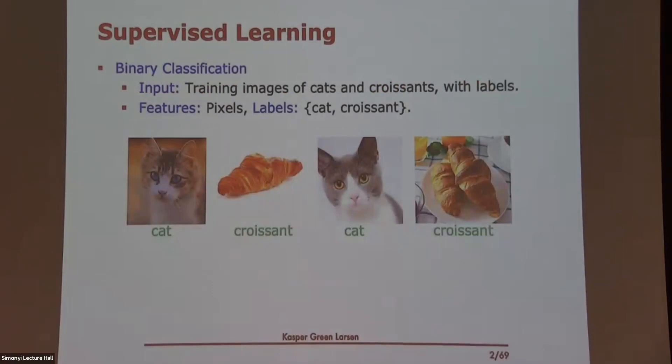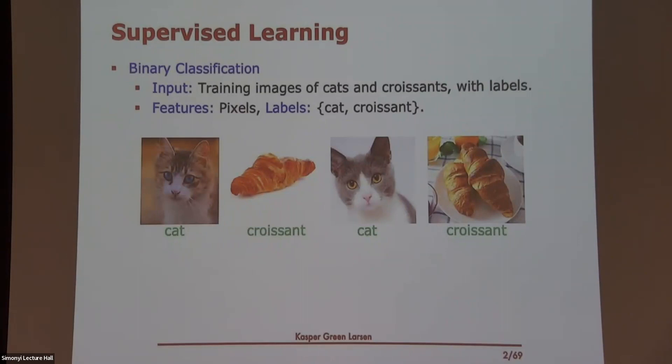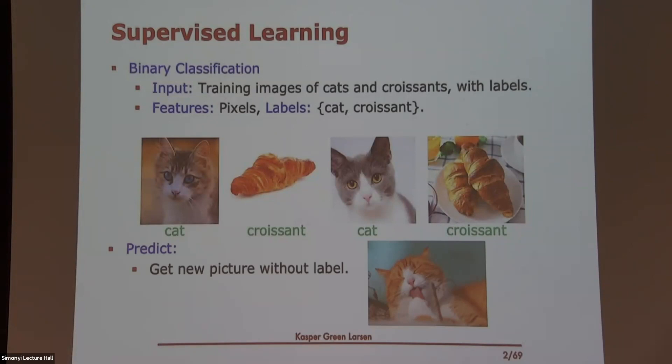We're looking at supervised learning, in particular binary classification problems, where there's some input — for instance, images — and you know what's on these images, they have labels. For instance, either it's a picture of a cat or a fish, and you want to take this training data of images and corresponding labels to make predictions on new data. So we're looking at binary classification, where there are only two possible classes.